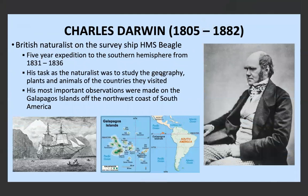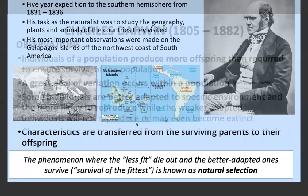Charles Darwin is the most important naturalist and scientist in this content. He was on the survey ship HMS Beagle and went on a five-year expedition to the Southern Hemisphere during the 1800s. His task was to study the geography, plants, and animals of the countries visited. His most important observations were made on the Galapagos Islands off the northwest coast of South America, where one of the organisms he most importantly observed was the Galapagos finches, which we'll look at in more detail in later videos.